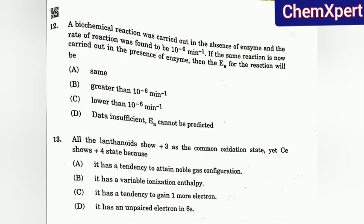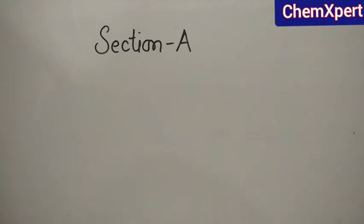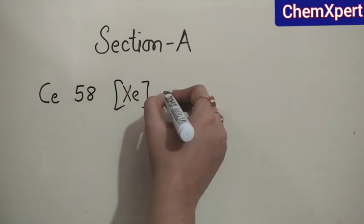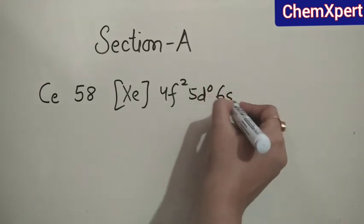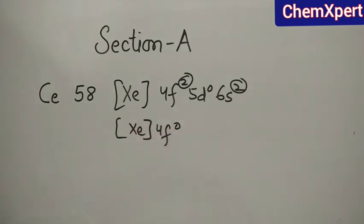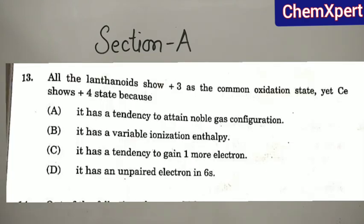Question 12: a biochemical reaction carried out without an enzyme had a rate of 10⁻⁶ min⁻¹. If the same reaction is carried out in the presence of an enzyme, the activation energy EA cannot be predicted from this data alone, so the answer is option B — data insufficient. Question 13: all lanthanides show +3 as a common oxidation state, yet cerium shows +4. Cerium's electronic configuration is [Xe] 4f² 5d⁰ 6s²; by losing 4 electrons it attains a 4f⁰ noble gas configuration. So option A is correct — it has a tendency to attain a noble gas configuration.